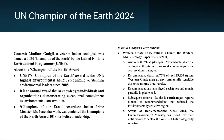The UN Champion of Earth Award, given by the United Nations Environment Programme (UNEP), was awarded in 2024 to Madhav Gadgil, a veteran Indian ecologist known for the Gadgil Report on the Western Ghats. This award is the highest environmental honor given by UNEP and has been awarded since 2005. Previously, Prime Minister Narendra Modi also received this award for leadership in public policy.